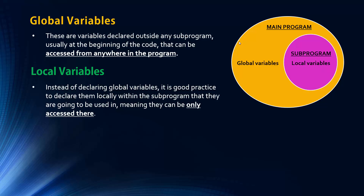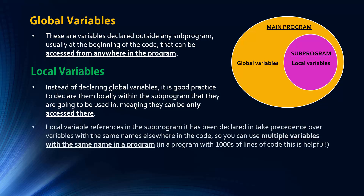Local variables can't be accessed by other parts of the program unless passed via parameters. Another way to input something to a subprogram is via a global variable, since subprograms can access them. Why is it good practice to use local variables over global ones? Local variable references in a subprogram take precedence, meaning you can use multiple variables with the same name across different subprograms — something you couldn't do with globals.